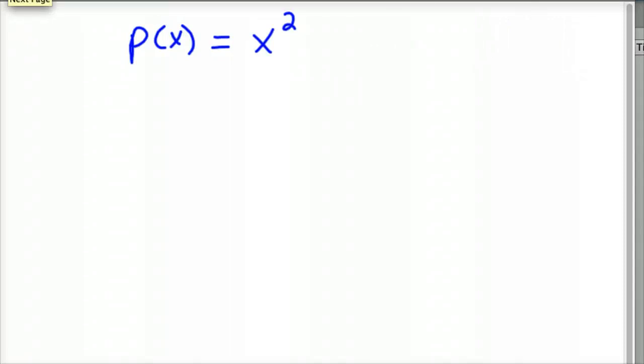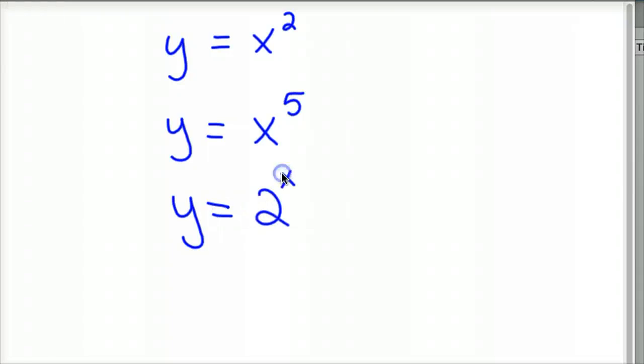So let's say, let's keep it simple. Let's let one of our functions be Y equals X squared. Let's let another one be Y equals X to the fifth, so a fifth degree. And then let's look at the exponential. The exponential function is Y equals two to the X would be an example of one. And let's just look at these three graphs and compare them in GeoGebra.